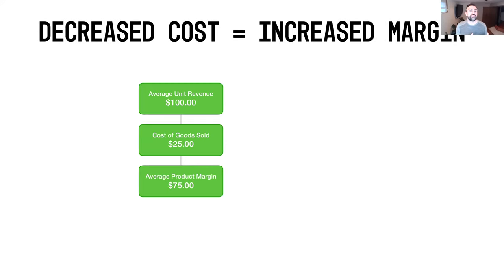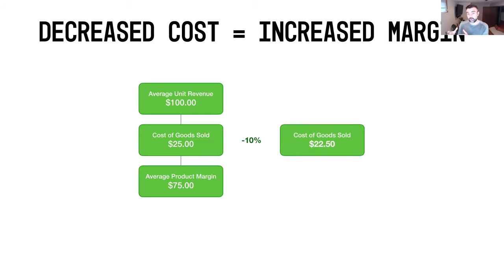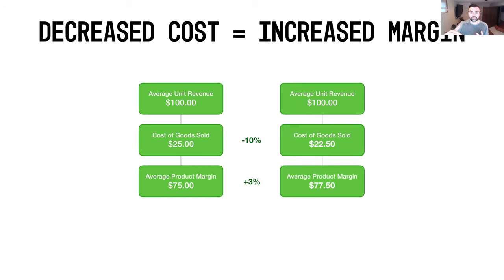In the next scenario, let's look at what happens if you decrease your cost of goods sold by 10%. I'm using 10% to keep the math simple — it could be 5%, 20%, 25%, whatever applies to your business; these are placeholder examples. So if you take your cost of goods from $25 and remove 10%, you're left with $22.50. Holding your average unit revenue constant at $100 and subtracting $22.50, you've increased your product margin by 3%, going from $75 up to $77.50.